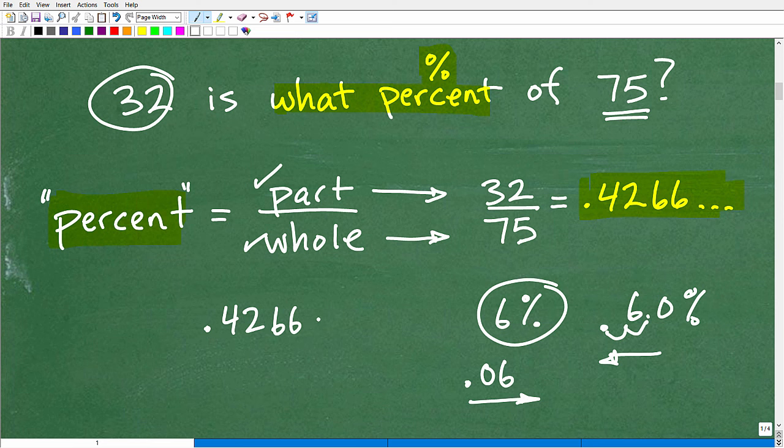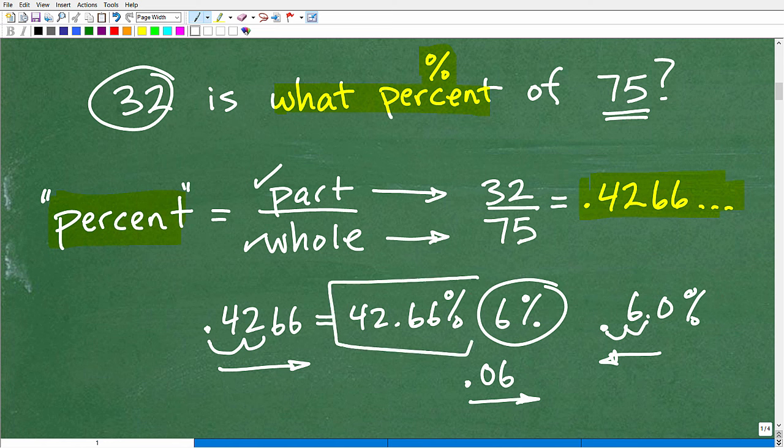So same thing here, 0.4266 as a decimal. If I want to see this as a percent, I just have to move the decimal point two places to the right now, which is the same thing as multiplying by 100. So that would be 42.66%. 42.66% is the answer.